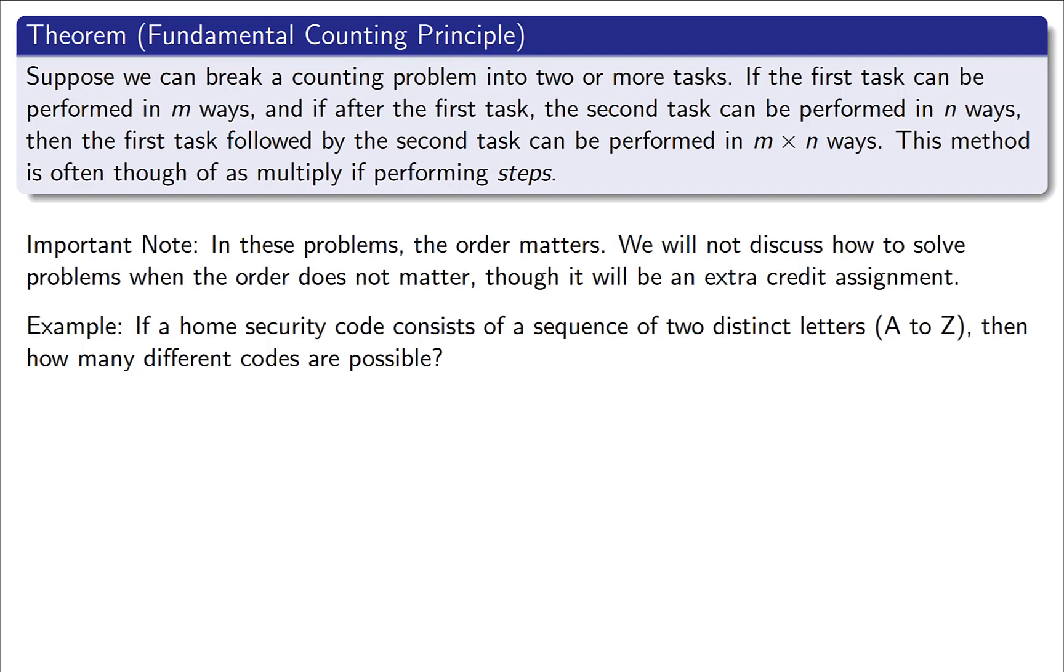Now let's look at a basic example. A home security code consists of a sequence of two distinct letters, just from A through Z. And we want to know how many different codes are possible. I'm going to set this up the same way I did before. Put blanks for the two characters, and I'm going to multiply them because of this fundamental counting principle. A through Z has 26 characters. So your first choice, you have 26 choices for your first letter.